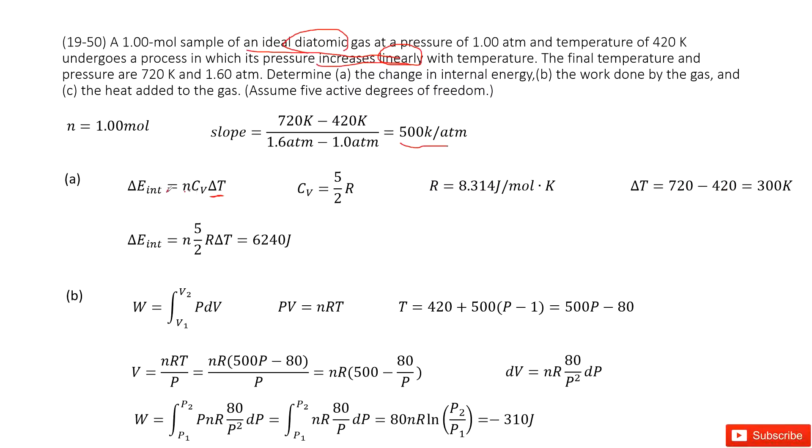Just 300K from 420K to 720K. Now n molar number is given as 1.0. The next part looks like we need to find molar specific heat at constant volume for this gas, diatomic gas, C_v.